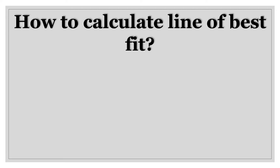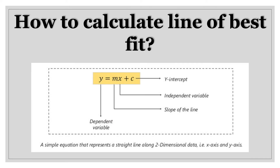Now that we've understood what is line of best fit and why we need it, let us see how to calculate it. Look at this equation: y is equal to mx plus c. We have all come across this equation before — it is a simple equation which represents a straight line along two-dimensional data, which is the x-axis and y-axis. y represents your dependent variable, x represents the independent variable, m is the slope of the line, and c is the y-intercept.